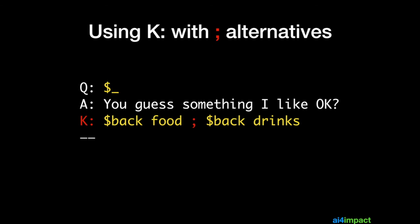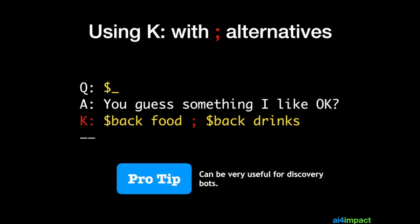You can also use K with semicolon alternatives. In this case I have a catch-all that shuttles the user into one of two different topics — either food or drinks — and it does this at random. This technique can be used for discovery or to give your bots more character.